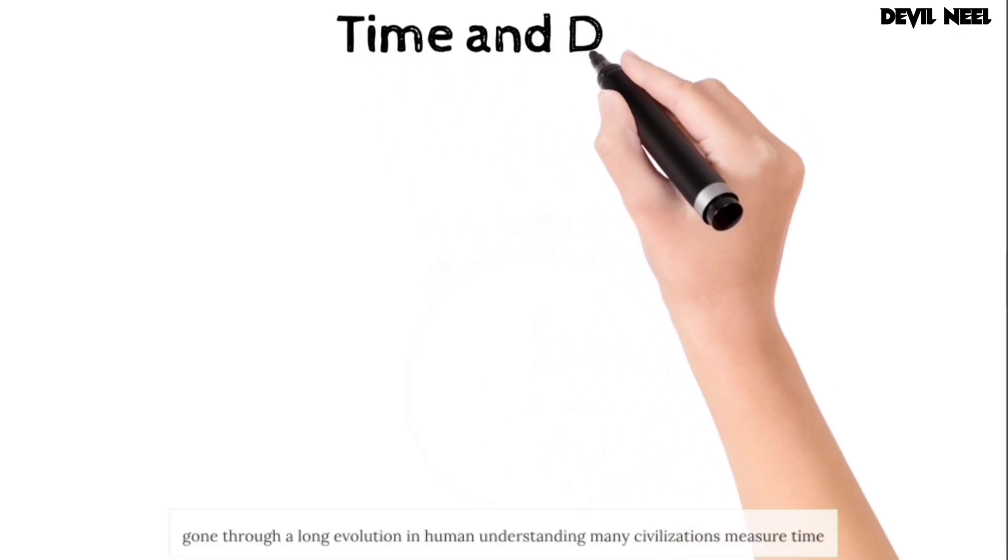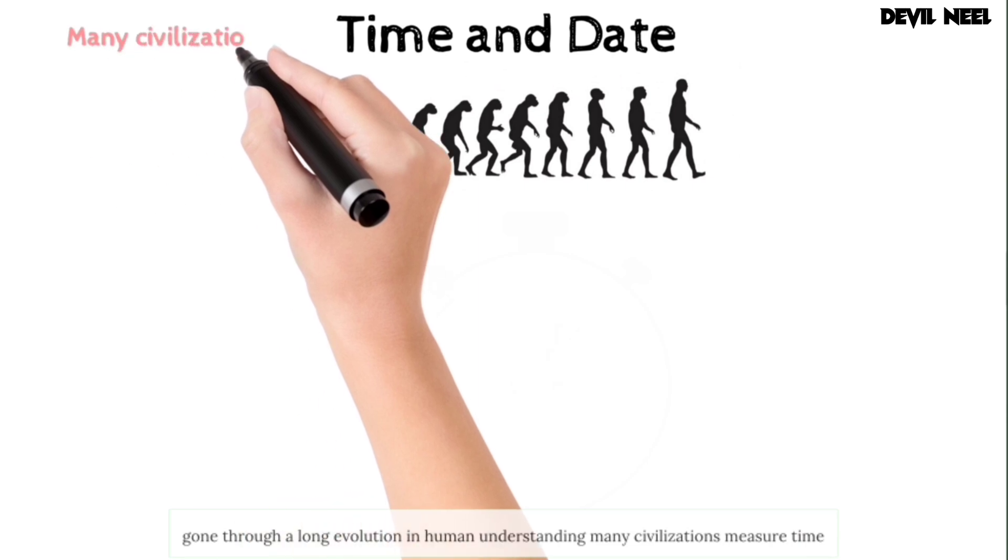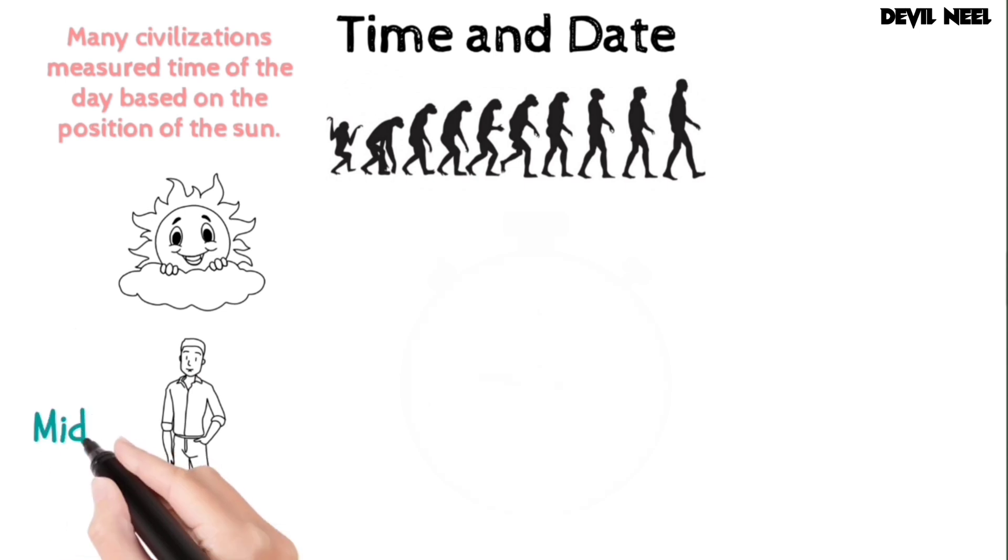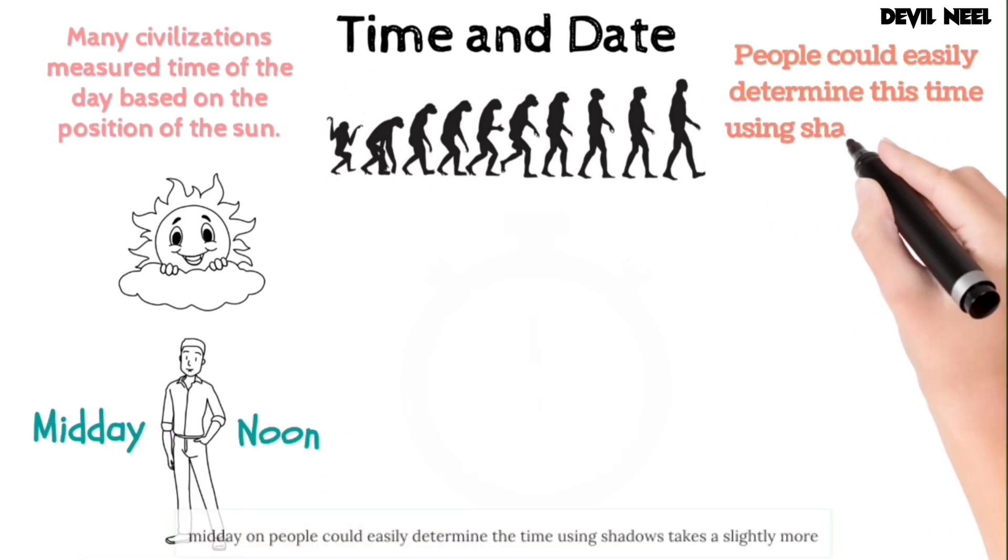Time and date have gone through a long evolution in human understanding. Many civilizations measure time of the day based on the position of the sun. When the sun is directly overhead, that's midday or noon. People could easily determine this time using shadow sticks.